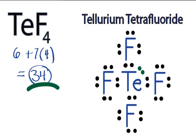So now that Te atom has 2, 4, 6, 8, 10 valence electrons, but that's okay because it's below row 2 on the periodic table and it can have an expanded octet. So we've used all 34 valence electrons. The fluorines' octets are satisfied, and the tellurium is fine.